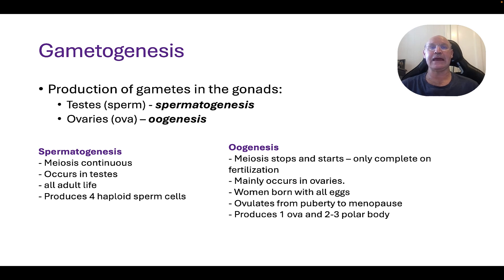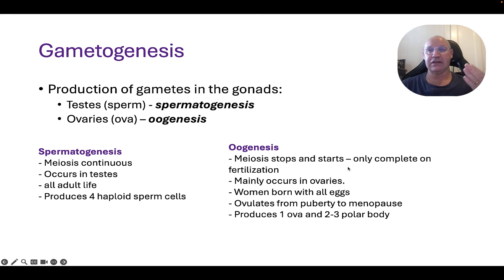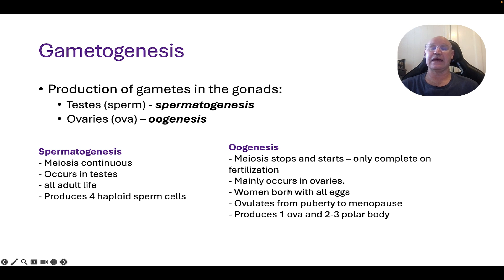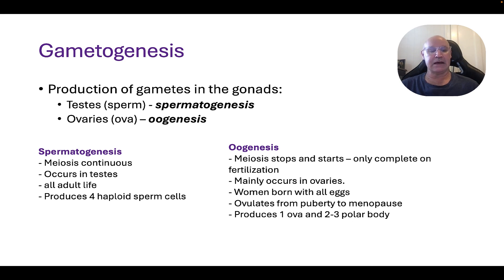To compare and contrast spermatogenesis and oogenesis side by side: spermatogenesis is continuous, whereas oogenesis is a discontinuous stop-and-start process. Spermatogenesis occurs in the testes; oogenesis occurs in the ovaries. Spermatogenesis occurs for all of an adult male's life, while women are born with all of their eggs and ovulate from puberty to menopause. In spermatogenesis, four haploid sperm cells are produced; in oogenesis, only one ovum and two to three polar bodies are produced.